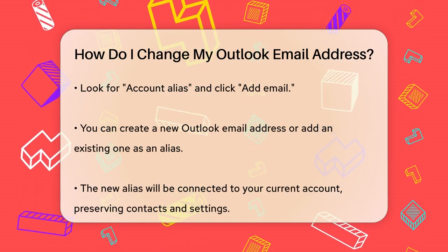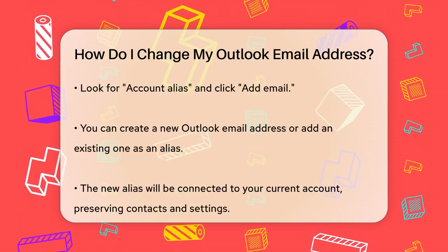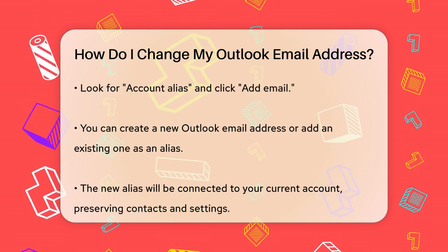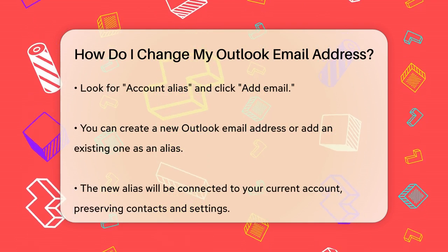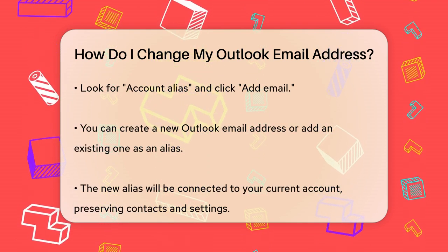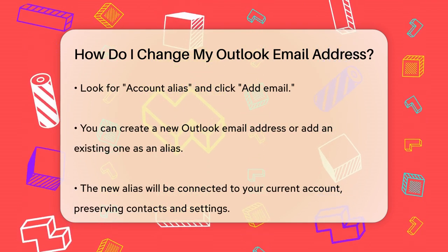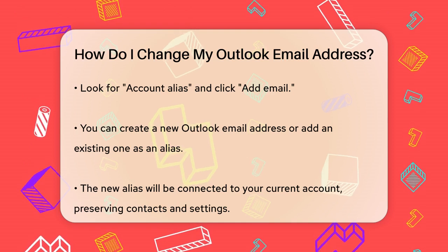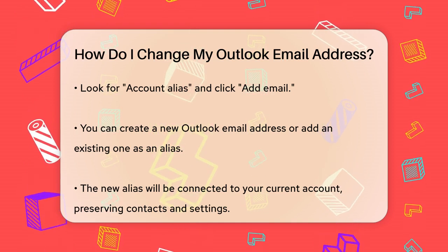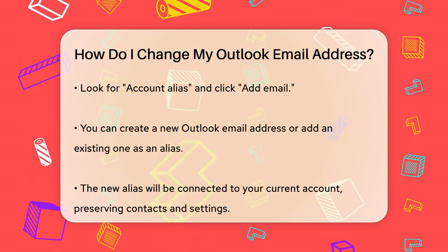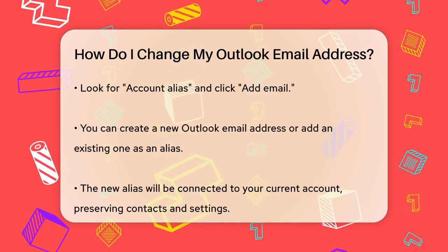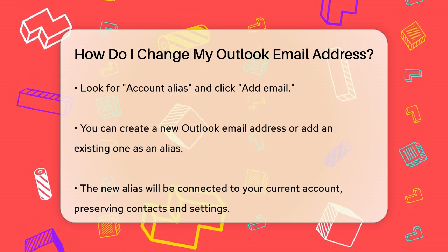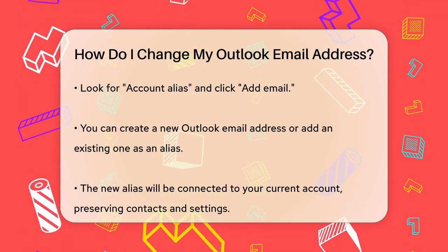Once you're in the Account Info section, look for Account Alias and click Add Email. Here, you can either create a new Outlook email address or add an existing one as your Microsoft account alias. This new address will be linked to your current account, so you won't lose any of your contacts or settings.